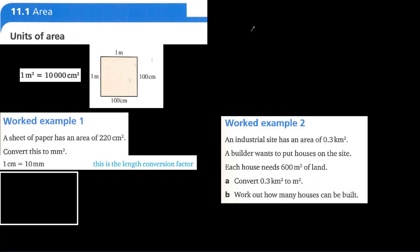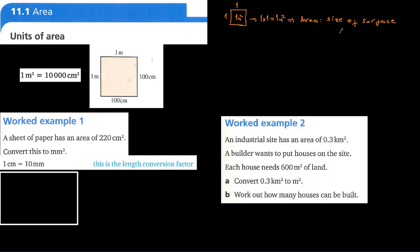Before studying the unit of area, I want to remind you about how we define area units using a square. If it is one unit by one unit, then this is one unit square — one times one equals one unit square. This represents the area, and area is the size of a surface.